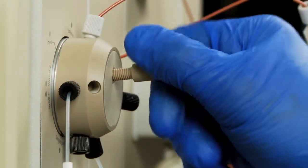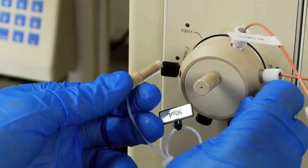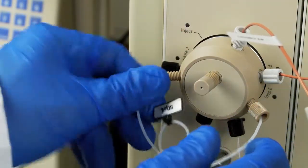Attach the injection port to the front of the inject valve. Attach the sample loop to the ports labeled loop E and loop F.